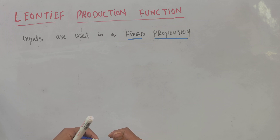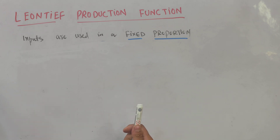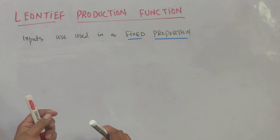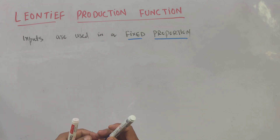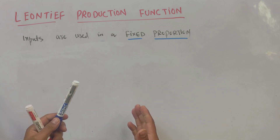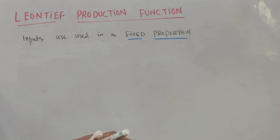In this video we will learn about the Leontief production function. We say a production function is Leontief if the inputs are used in a fixed proportion to produce a certain level of output.